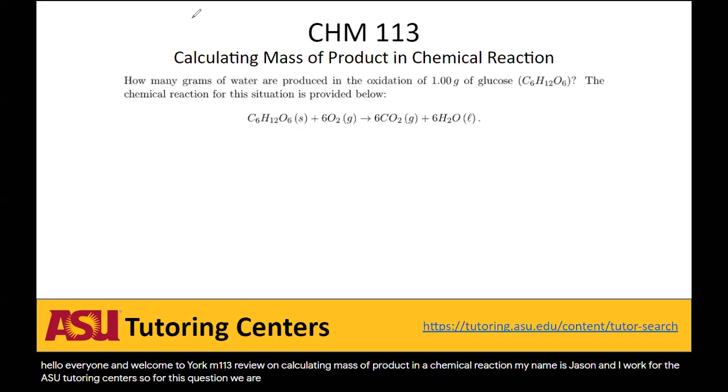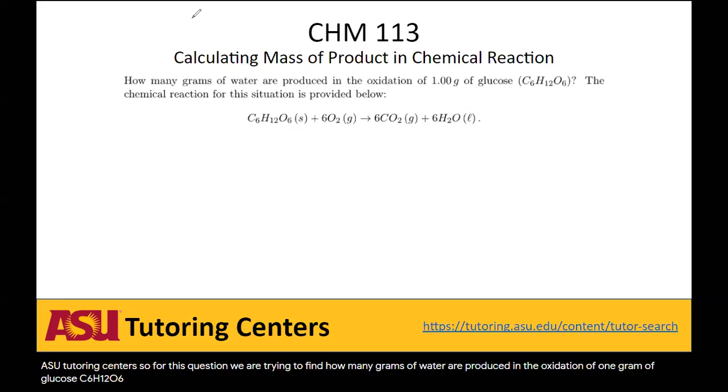For this question we are trying to find how many grams of water are produced in the oxidation of one gram of glucose, C6H12O6. The chemical reaction for this process is given below.